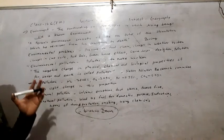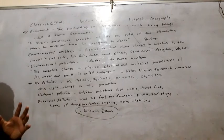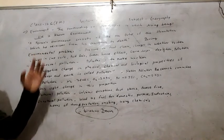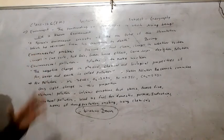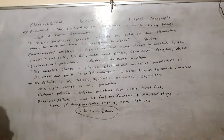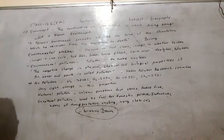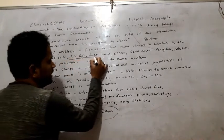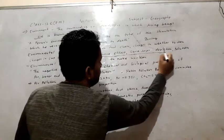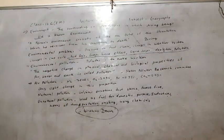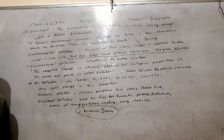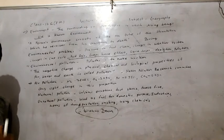Many problems are created by humans and nature for the environment. These environmental problems include: disruption of the food chain, changes in the weather system, changes in the crop cycle, acid rain, greenhouse effect, ozone layer depletion, and pollution. In this lesson, we discuss acid rain, greenhouse effect, ozone layer depletion, and pollution.